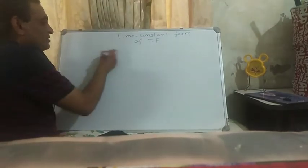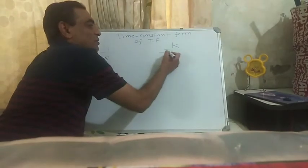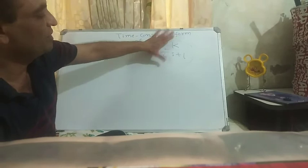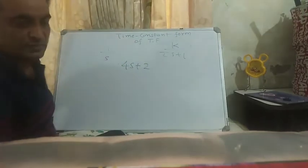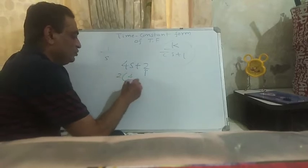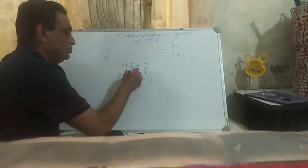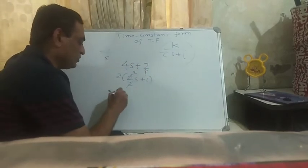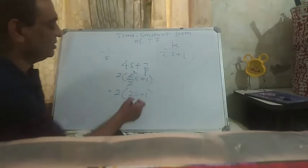For a first-order term in the numerator, say 4s+2, take 2 common to get 2(2s+1). So this becomes 2·(2s+1) — gain is 2, τ is 2. For a term like (s+5)/(s+6), converting to time constant form: take 6 common in the denominator to get s/6+1, giving (1/6)/(s/6+1). Here k is 1/6 and τ is 1/6. This is how any first-order term in numerator or denominator is converted into time constant form.